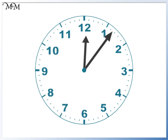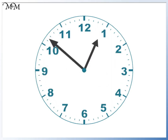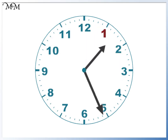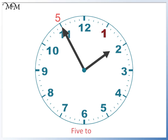We'll look at an example starting at 1 o'clock. The minute hand moves around to 11. This is 5 minutes to the next hour, so we can say that it's 5 to. The hour hand has almost reached the next hour — the next hour is 2. So the time is 5 to 2.